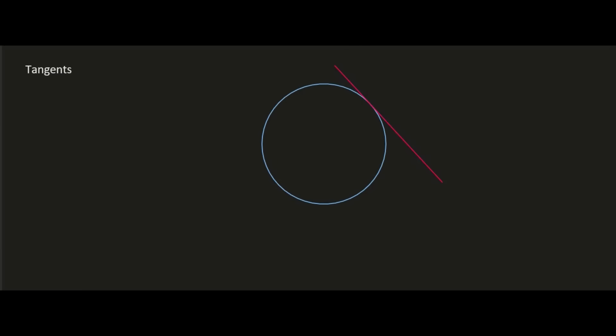Now if I have the center of the circle and I also know the coordinates of the point where the tangent touches the circle, I can do some useful things. I could work out the equation of this tangent because the equation of a tangent is a straight line: y = mx + c. We should always remember that a radius and a tangent meet each other at 90 degrees.